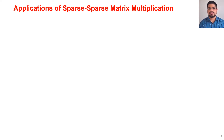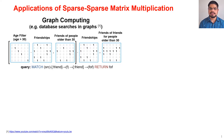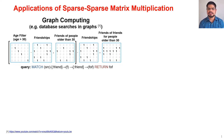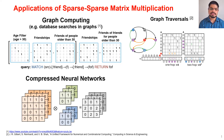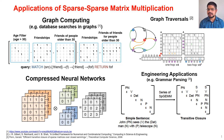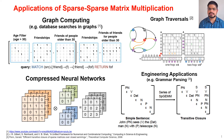There are numerous applications of sparse-sparse matrix multiplication, such as in graph databases. For example, a query of finding friends of friends of people whose age is greater than 30 can be performed by doing a series of sparse-sparse matrix multiplies. Similarly, other algorithms in graph traversals, sparse compressed neural networks, and emerging engineering applications such as grammar parsing can be accomplished by performing sparse-sparse MM.